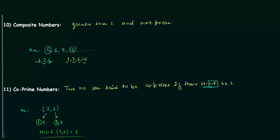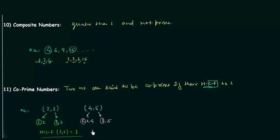Let's take another example: 4 and 5. The factors of 4 are 1, 2, and 4, and the factors of 5 are 1 and 5. We find the common factors — 1 is the only common factor, hence 1 is the greatest common factor. So 4 and 5 are co-prime numbers.